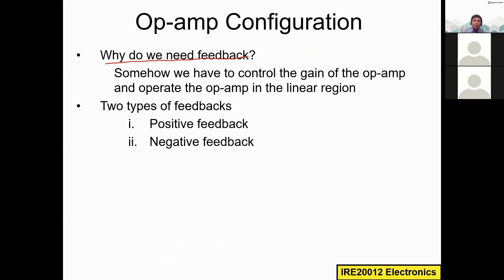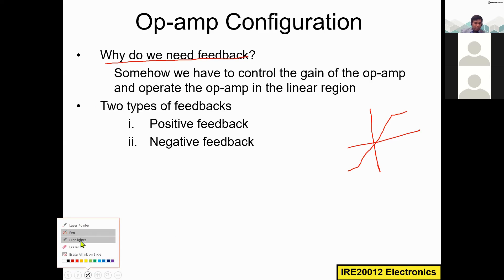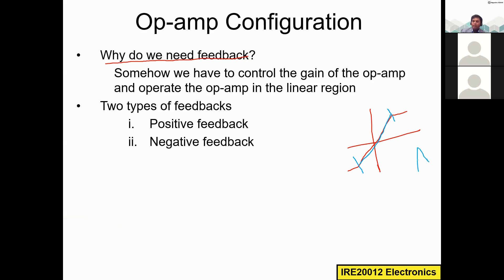Why do we need feedback? We need feedback to control the gain of the operational amplifier and operate the op-amp in the linear region. We know the voltage transfer curve and we want to operate the operational amplifier in the linear region — the region where the output goes linearly. So for this, we have to control the gain, and we must need a feedback.